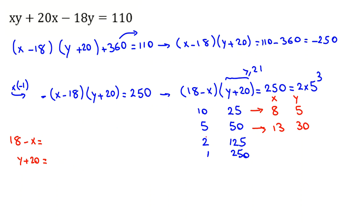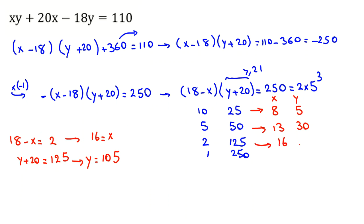Next case: 18 minus x equals 2, and y plus 20 equals 125. So y equals 125 minus 20, which is 105. And x equals 18 minus 2, which is 16. So in this case, x equals 16 and y equals 105.